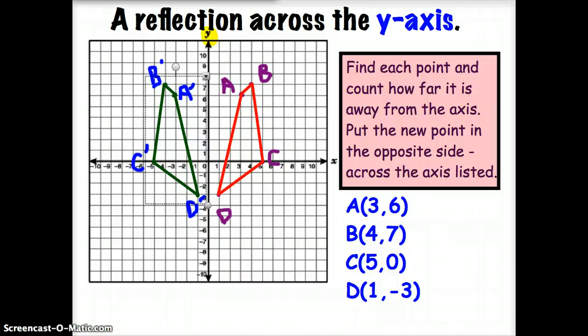Your image should look something like this. On the right, we have the quadrilateral ABCD. Once it's reflected, it looks like A prime, B prime, C prime, D prime on the left. Again, you have to count how far away each ordered pair is from your y-axis and put it on the other side. If you've got this correct, give yourself a puppy dog next to your picture. If you did not, go back and watch the previous example.